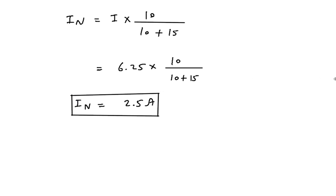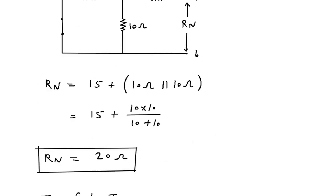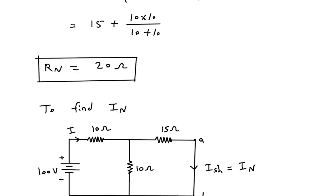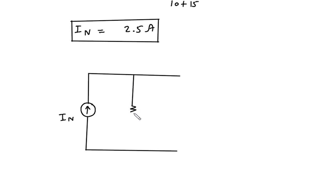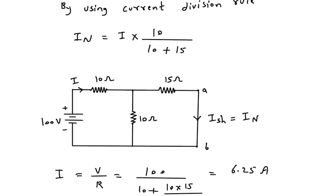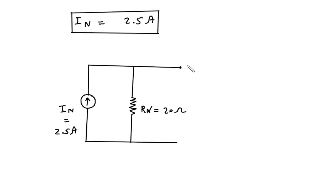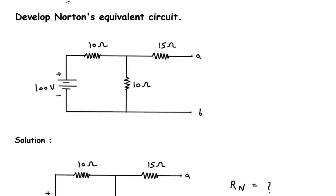Now we have the value of In and Rn, so from this we can draw Norton's equivalent circuit. Norton's equivalent circuit will be In in parallel with Rn. This will be Rn. The value for In is 2.5 Ampere and the value for Rn is 20 Ohm. This is terminal A and this is terminal B. So, this is the Norton's equivalent circuit.